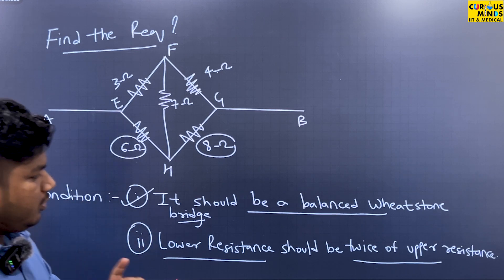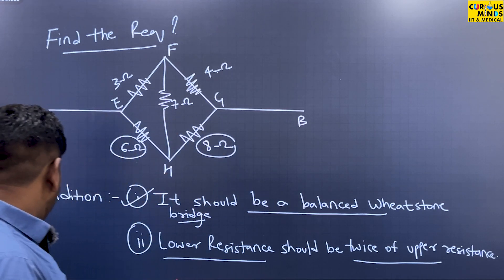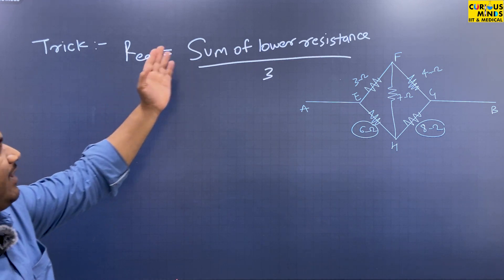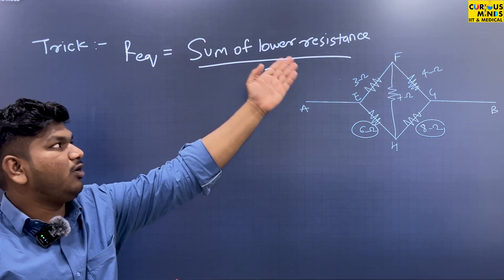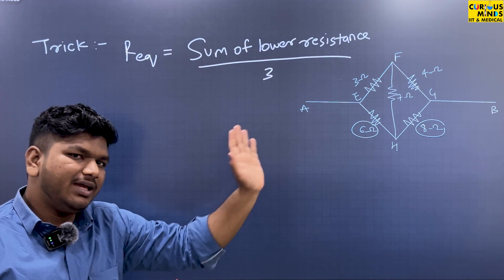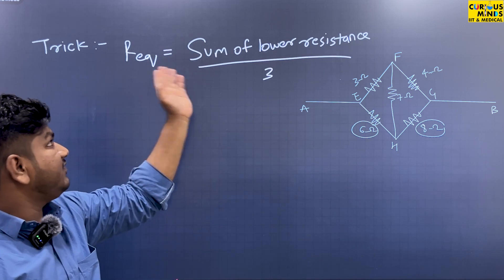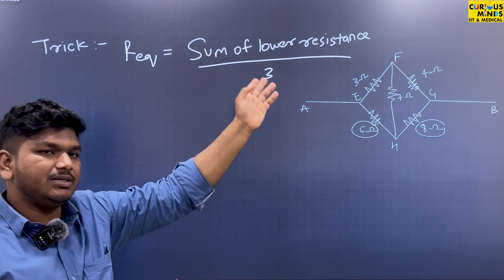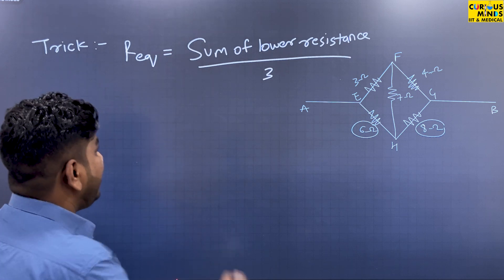So you can use this trick: the equivalent resistance will be the sum of the lower resistances divided by 3. I repeat, the equivalent resistance will be the sum of the lower resistances divided by 3.